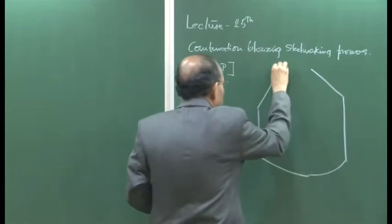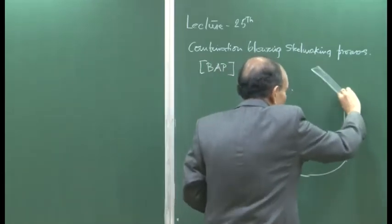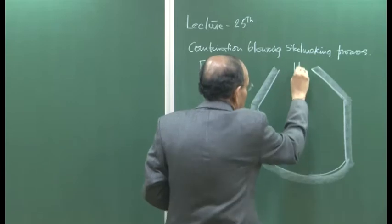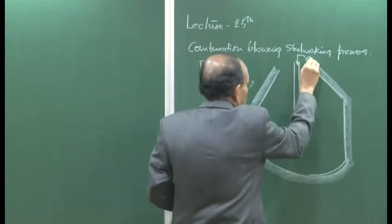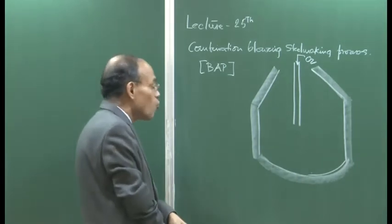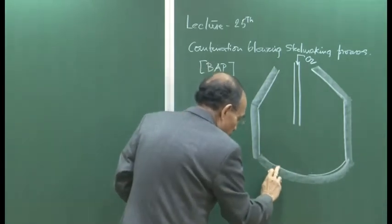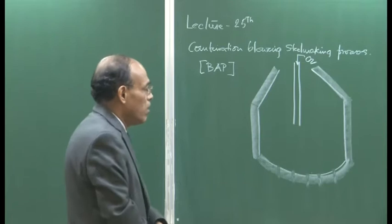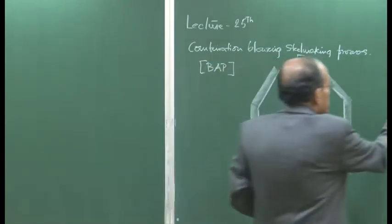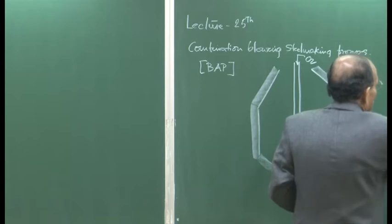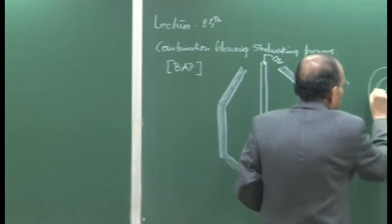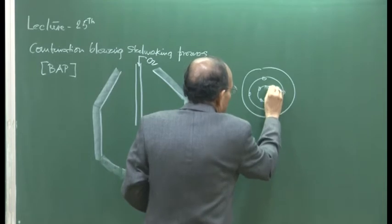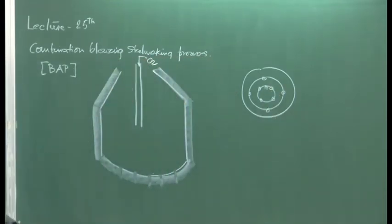So this is our converter. We have the top lance here — the same type of multi-hole, multi-hole water-cooled lance used in LD steelmaking. And then we have several porous plugs — 6 porous plugs or 12 porous plugs — which can be organized in different ways. This is an 8 porous plug arrangement; there could be 12 porous plugs and so on.